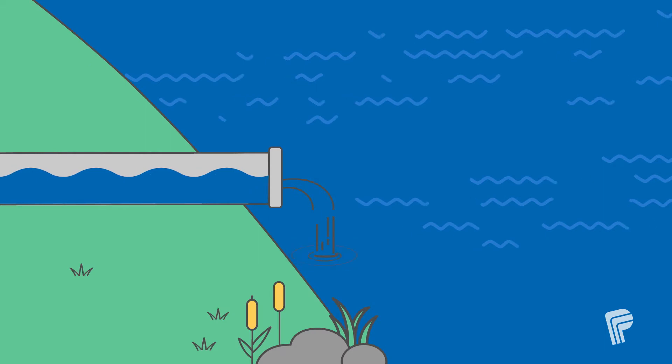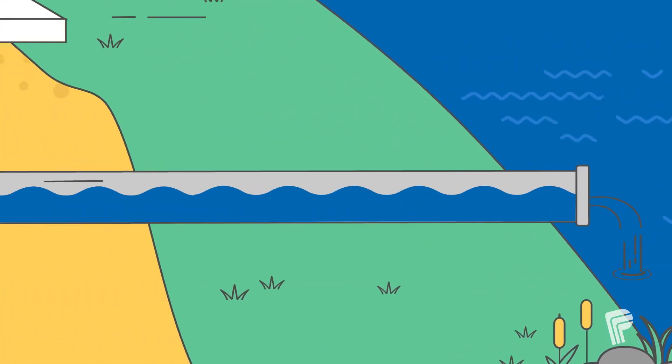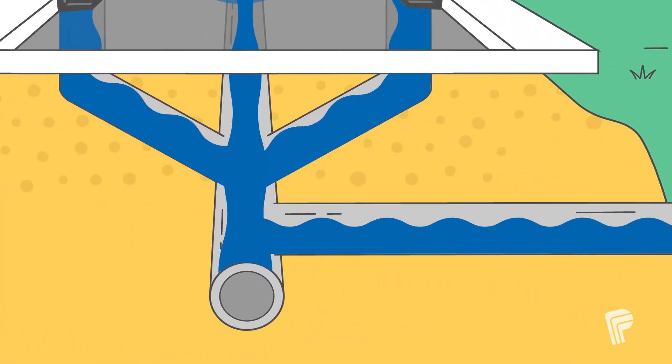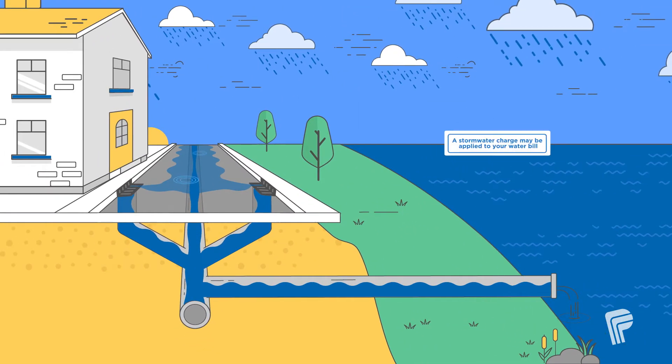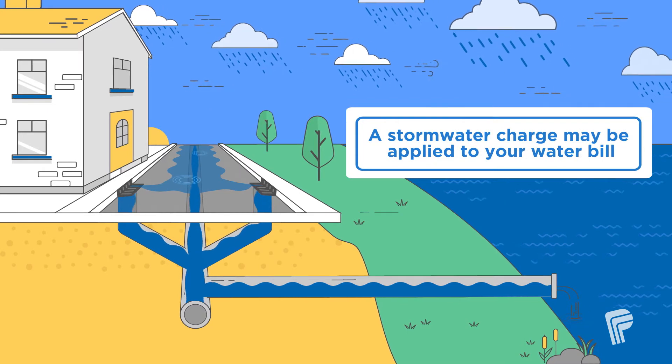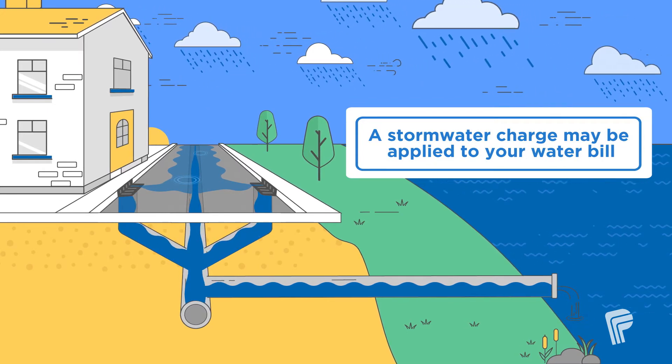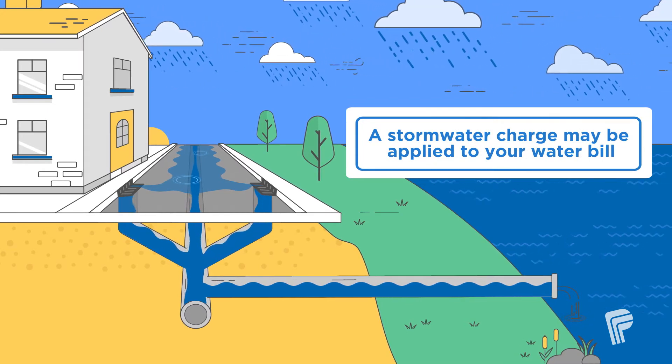Your city or town is in charge of designing, building, and maintaining these pipes or ditches within your municipality that protect you and your property. A stormwater charge may be applied to your water bill by your municipality to help pay for managing this runoff.